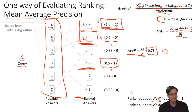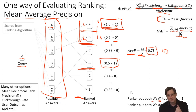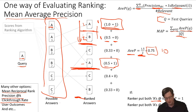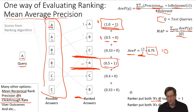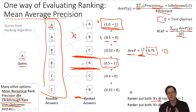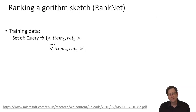Mean average precision is one useful way to evaluate ranking algorithms, but there are a lot more: mean reciprocal rank, precision at K — where you just pick a K relevant to your use case, which is kind of like an operating point — and click-through rate, which is more of a user outcome metric where you say I'm going to show three things to a user and I want to know what percent of the time the user clicks, which makes money. That's a more user outcome-focused way to evaluate a ranking algorithm.